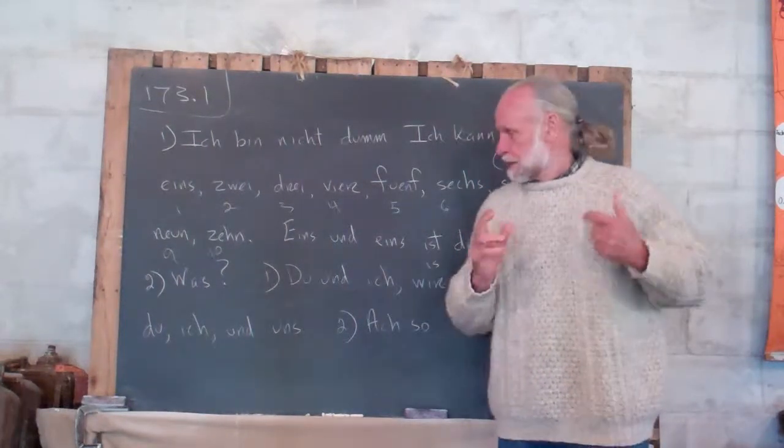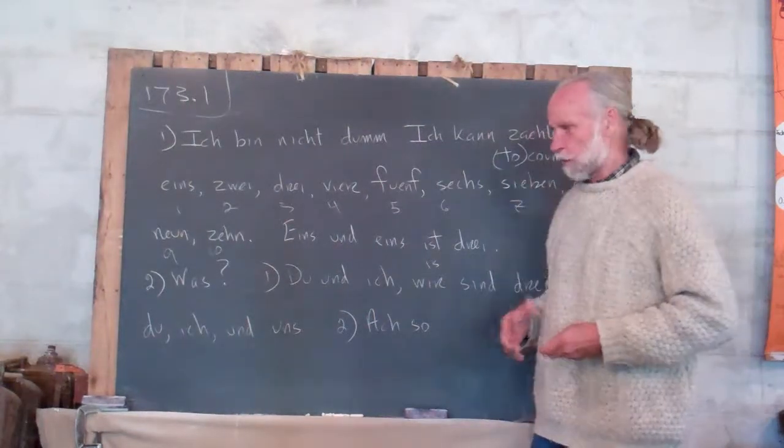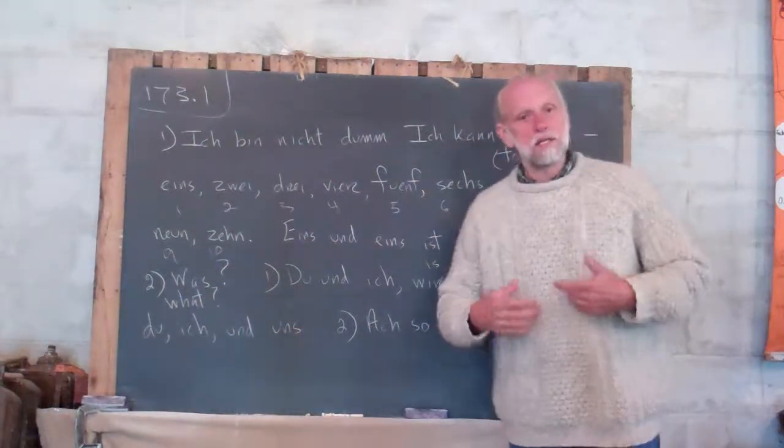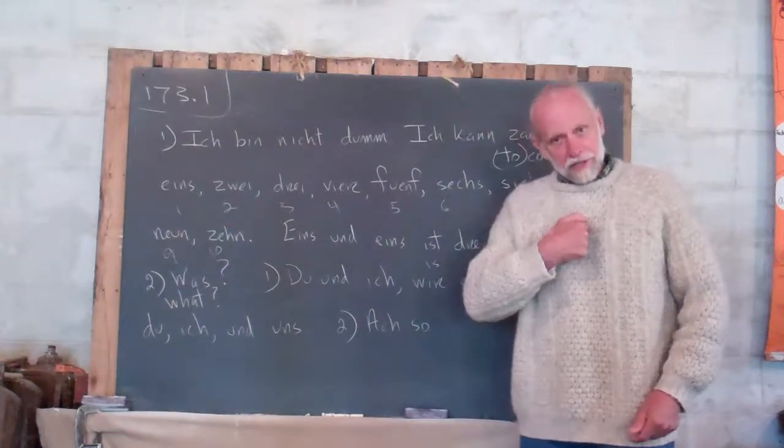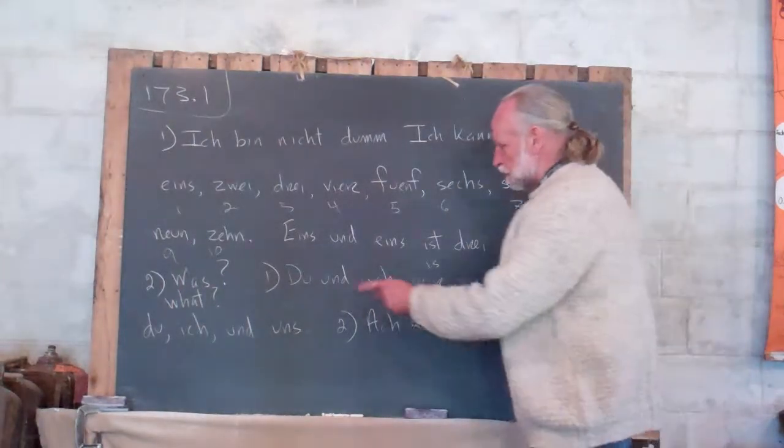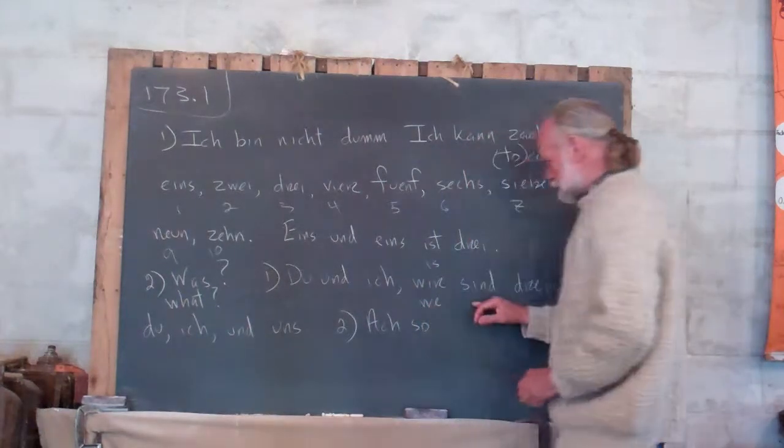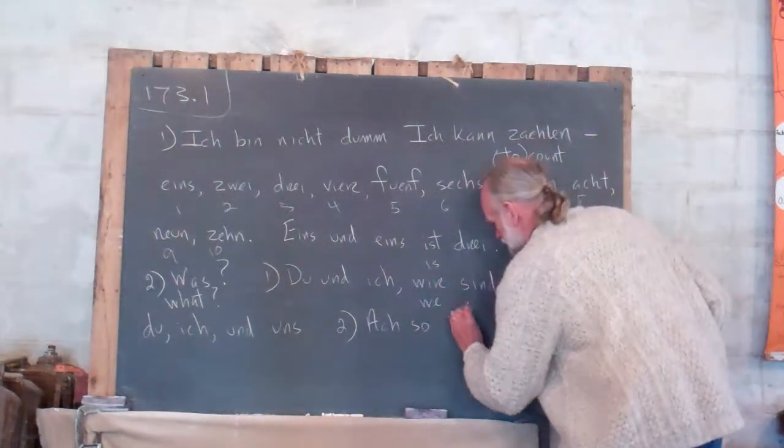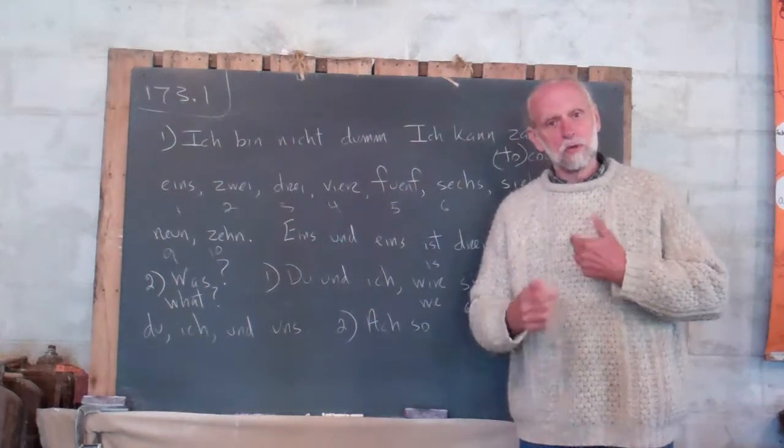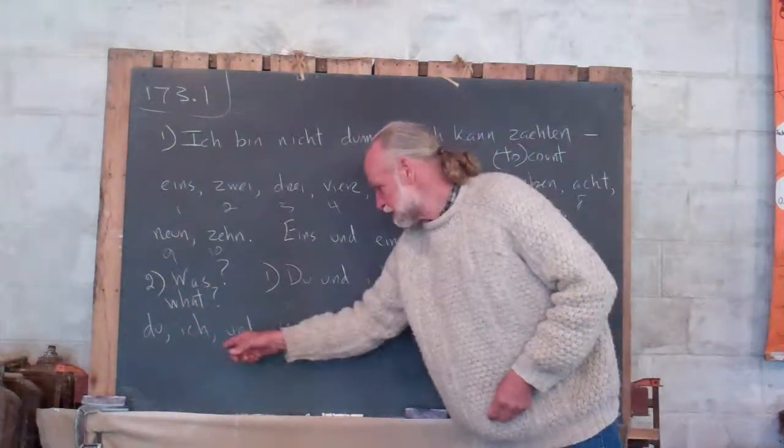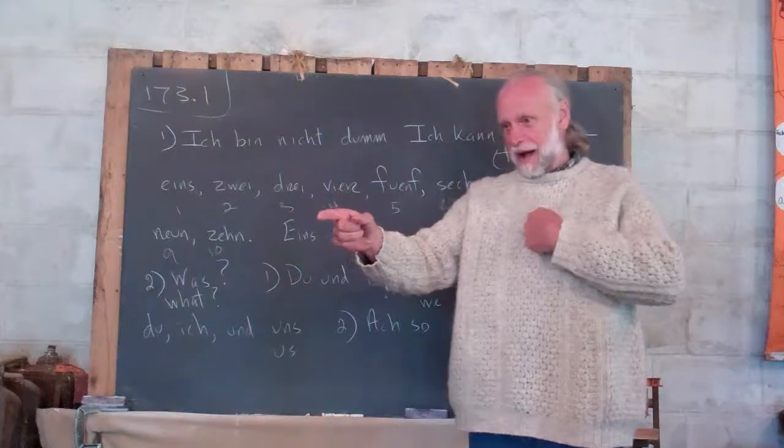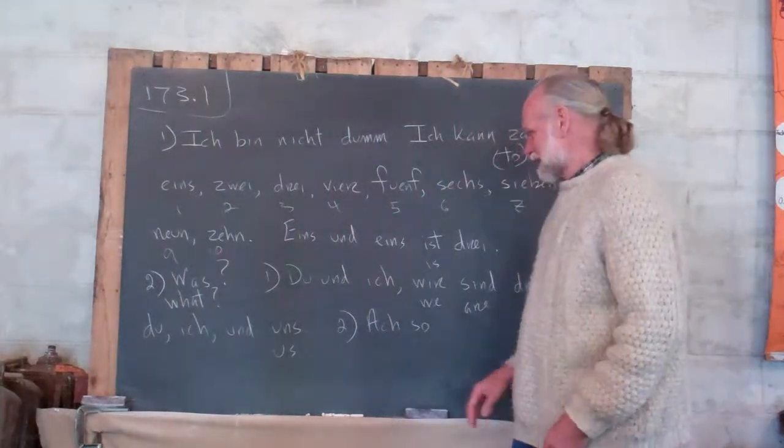Eins und eins ist drei. And she says, was? That doesn't make sense. Was? And he explains, du und ich, wir, you and I, we, sind drei. We are drei. And he'll count. Du, ich und uns. You see, you can count them. There's you, there's I, and there's us together.